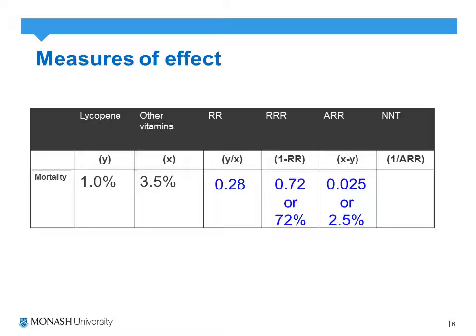Absolute risk reduction is simply the difference between outcomes in the intervention and control groups — in this case, 3.5% minus 1%. This is useful when calculating number needed to treat. Unlike relative risk reduction, number needed to treat takes into account the absolute risk. There's no point saying your risk reduces by 72% when the baseline risk was only 1% to 3.5%. Based on this hypothetical scenario, we have a number needed to treat of 40 — meaning we'd need to treat 40 patients with lycopene to prevent one person from dying.